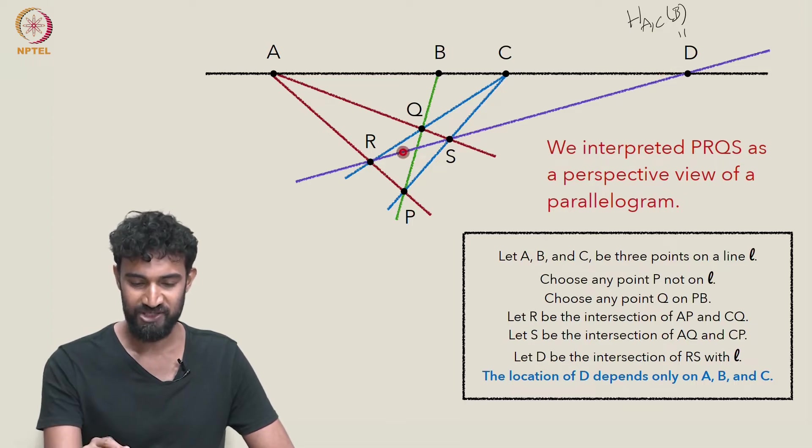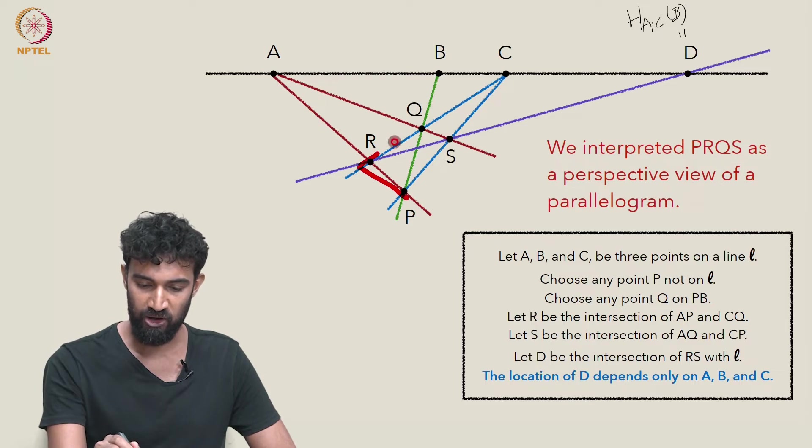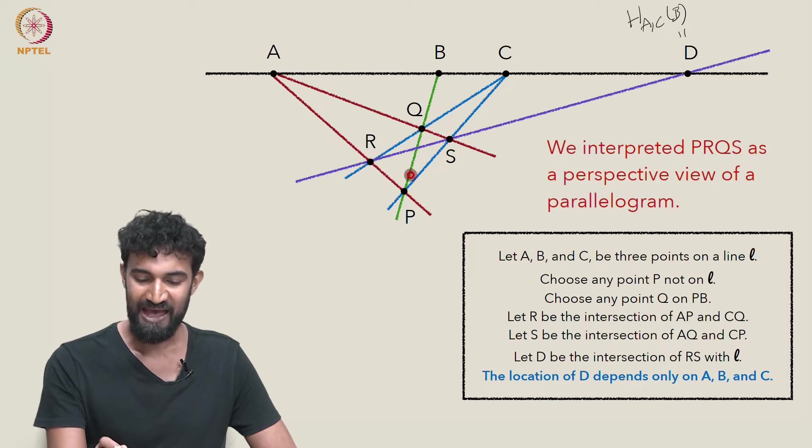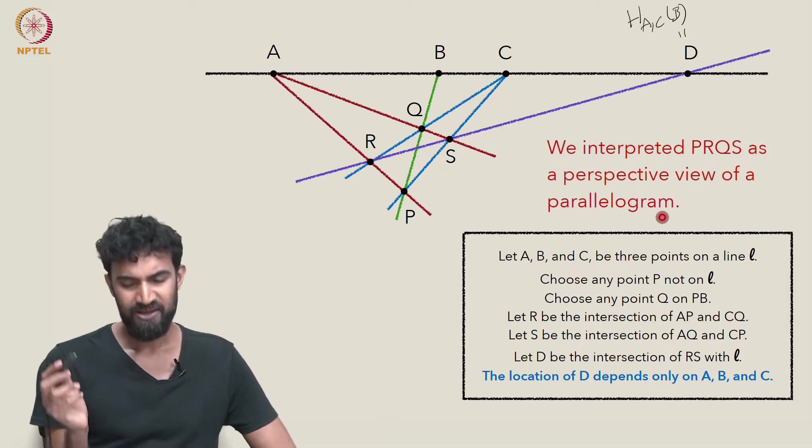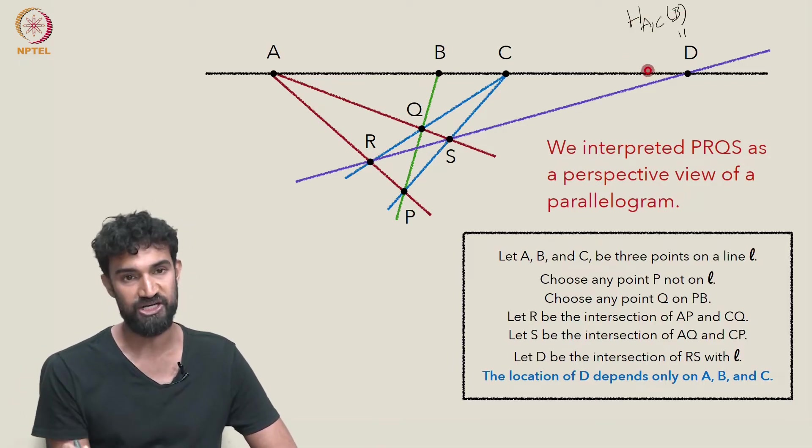And the diagonal RS hit our original line at this harmonic conjugate point. Basically, our construction involved creating this parallelogram PRQS and viewing this quadrilateral PRQS as a perspective view of a parallelogram. That's how we proved that the harmonic conjugate was well defined.